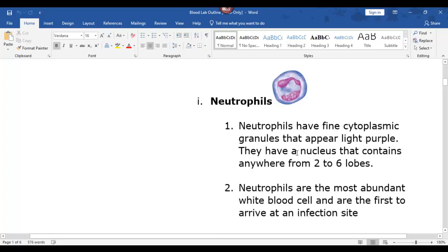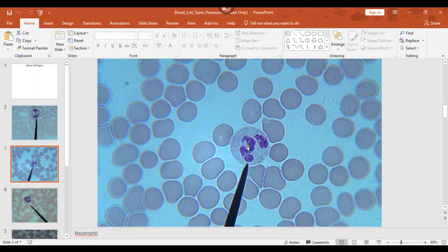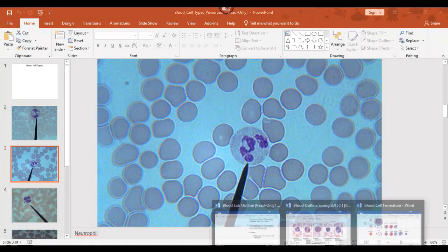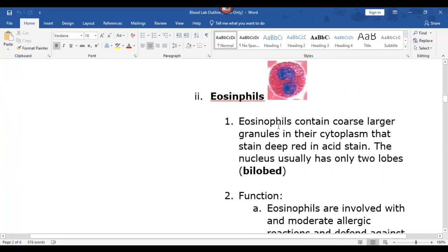All right, so those are neutrophils. This picture, that's a pretty good one, and that's a big one. All of these are white blood cells, and that little guy right there is most likely a platelet. It almost looks like a smudge. So that's a neutrophil. Next up, our next contestant is called an eosinophil.